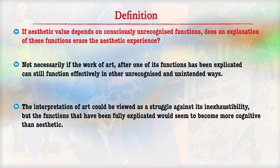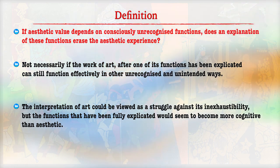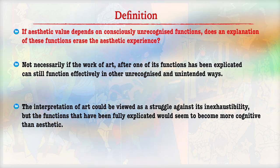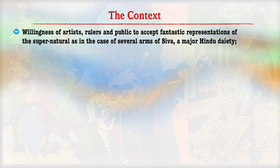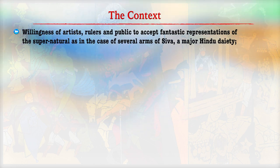The interpretation of painting should be viewed as a struggle against social issues and the contemporary challenges faced by society. Now let us understand the concept and context of Indian paintings. Much of Indian painting is focused on religious form in terms of content. Countless myths and legends are represented as subject matter, such as the ancient heroes of Lord Krishna and his devotees. There was a willingness on the part of the artist, rulers and public to accept the fantastic representation of the supernatural, as in the case of the several arms of Lord Shiva, a major Hindu deity.